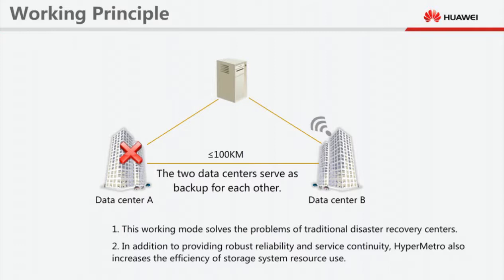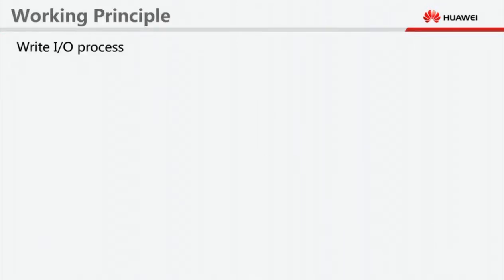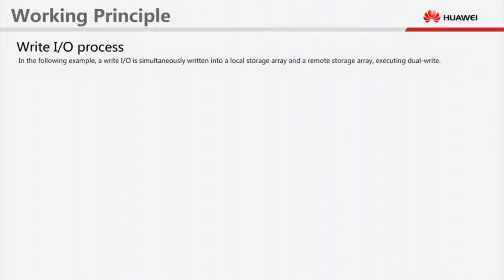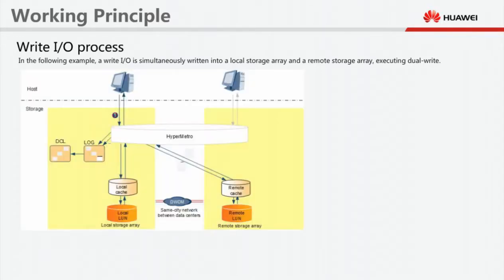Let's see how the IO processing mechanism of HyperMetro works. Write IO process. In the following example, a write IO is simultaneously written into a local storage array and a remote storage array, executing dual write. Step 1: A host delivers a write IO to the HyperMetro management module.